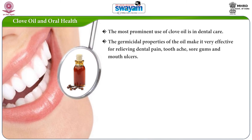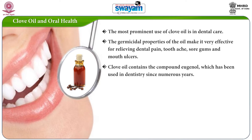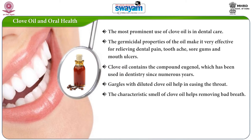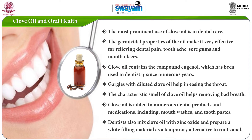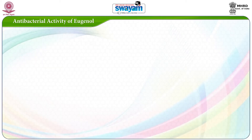The most prominent use of clove oil is in dental care. The germicidal properties of the oil make it very effective for relieving dental pain, toothache, sore gums, and mouth ulcers. Gargles with diluted clove oil help in easing the throat, and the characteristic smell helps remove bad breath. As a result, clove oil is added to numerous dental products including mouthwashes and toothpastes. Dentists also mix clove oil with zinc oxide to prepare a white filling material as a temporary alternative to root canal.